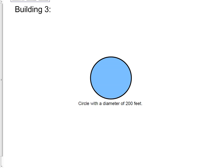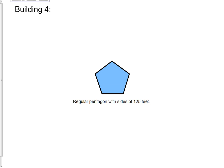Building number three is a circle with a diameter of 200 feet. Building four is a regular pentagon with a side of 125 feet.